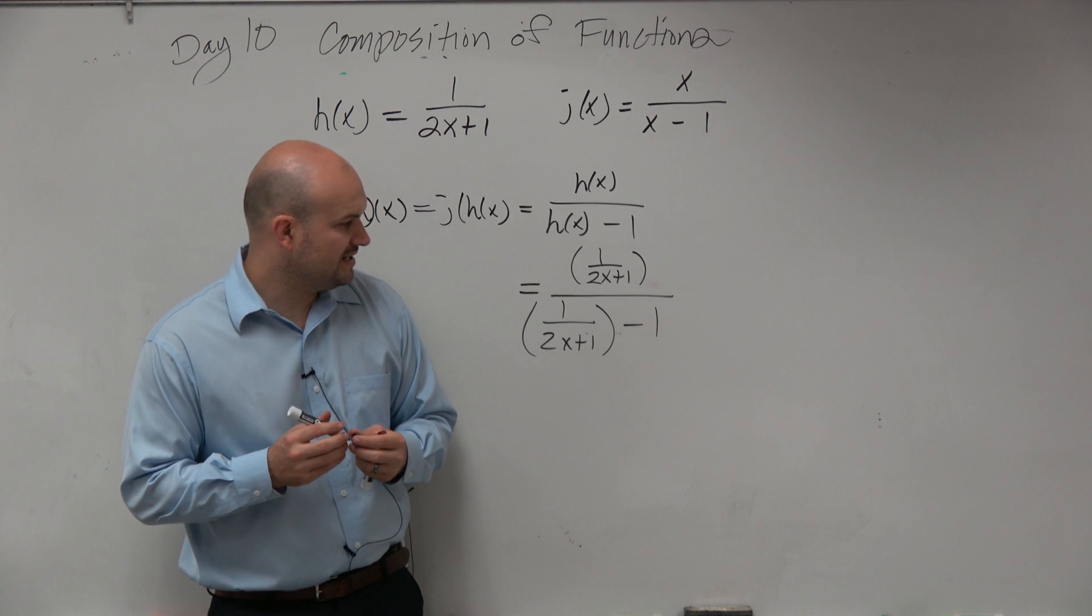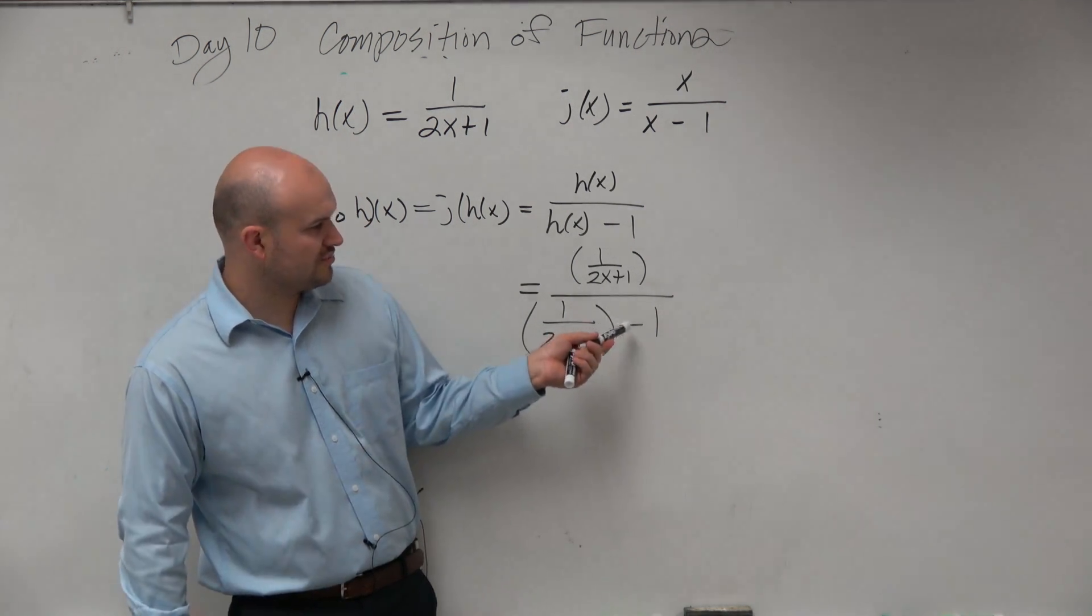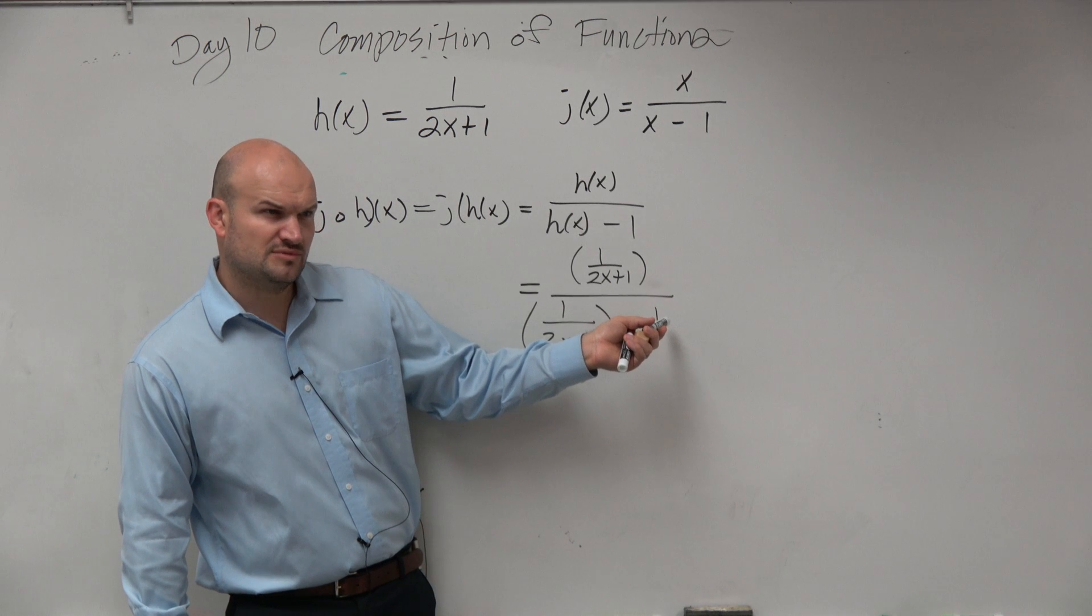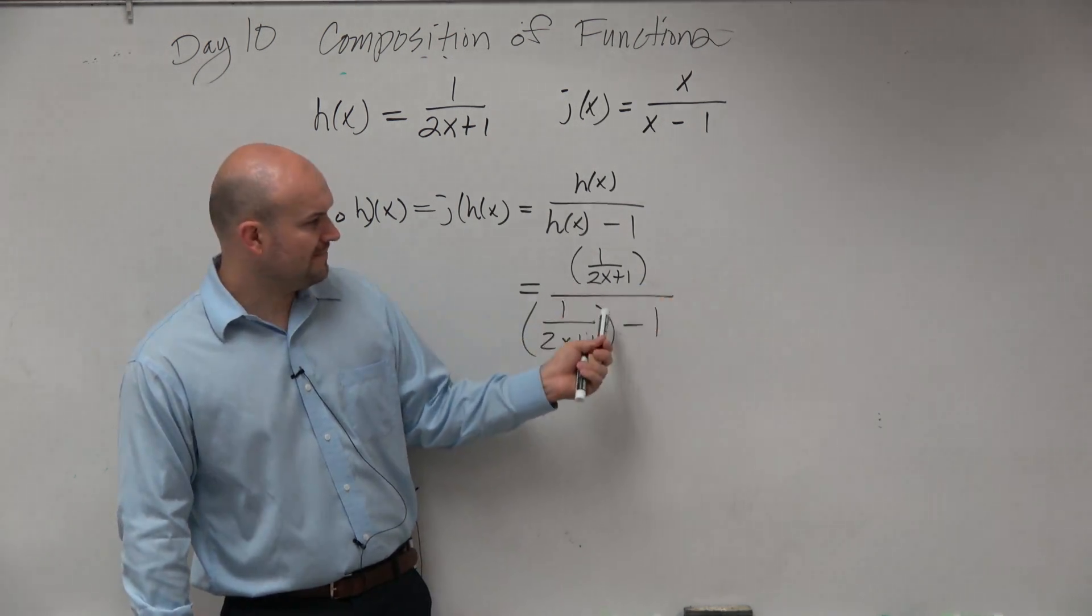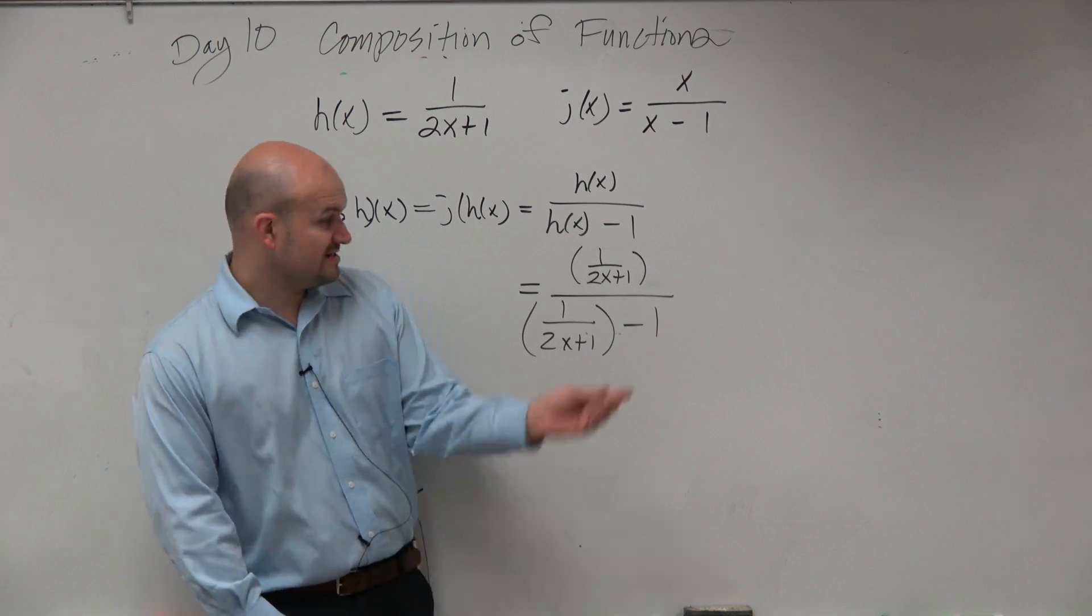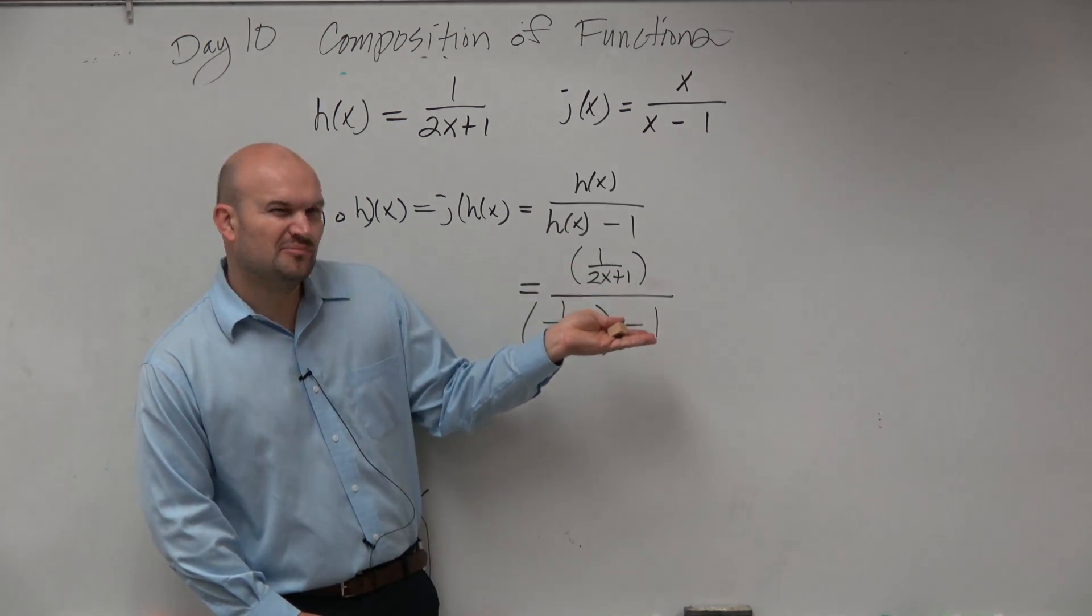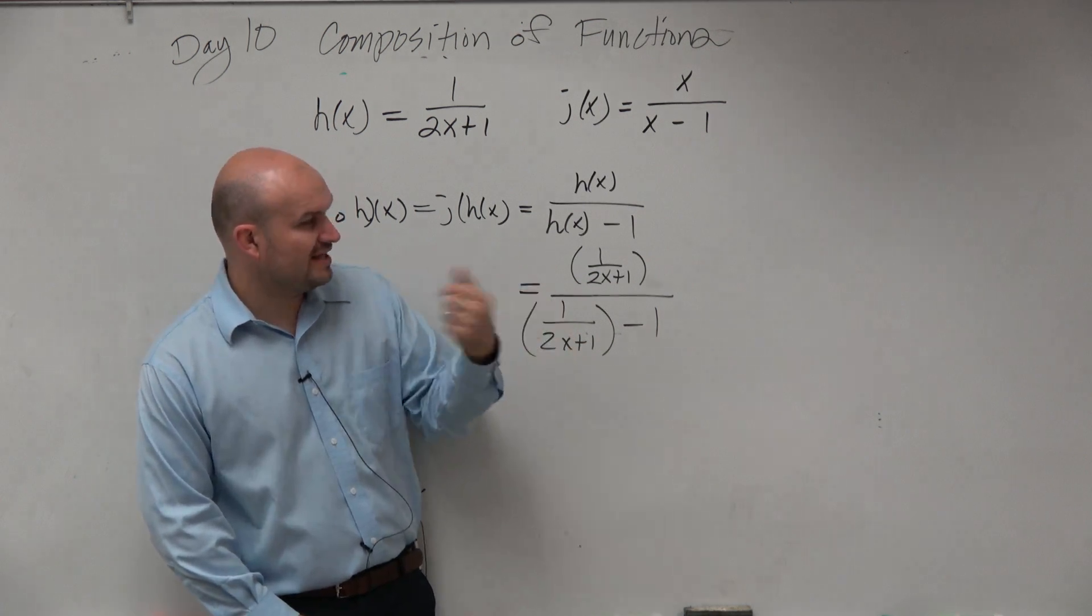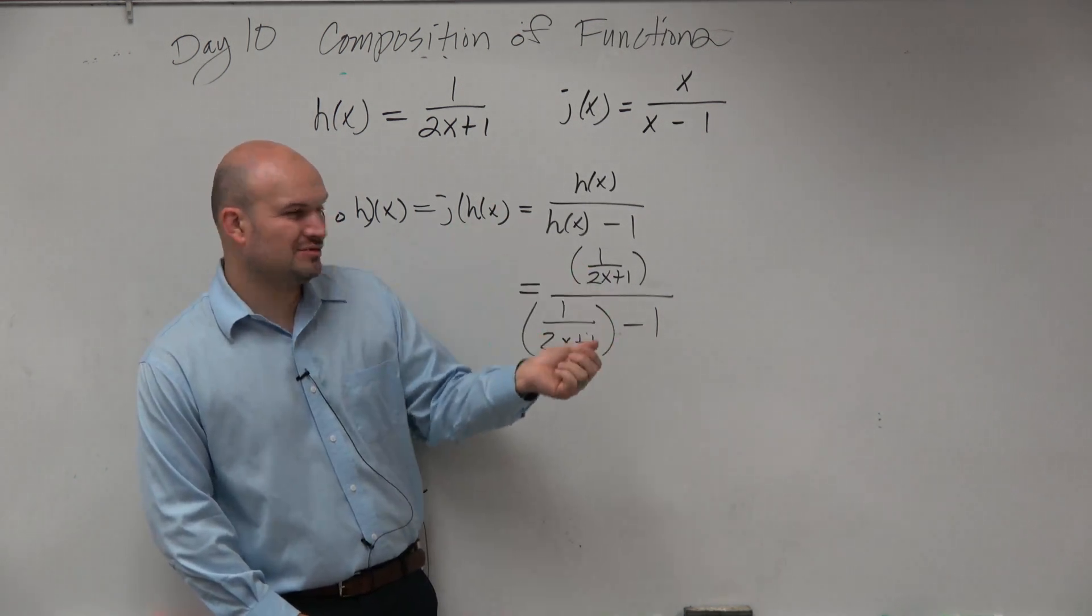This is going to be 1 over 2x plus 1 all over 1 over 2x plus 1 minus 1. The reason why I use parentheses is because I want you to understand you can't subtract this 1 and that 1. That's in the denominator. That's in the numerator. So, you can't subtract those, right? But what we have is we have an issue now. We've got to find the domain. Now, technically, we composed this correctly. It's not simplified, but it's composed.